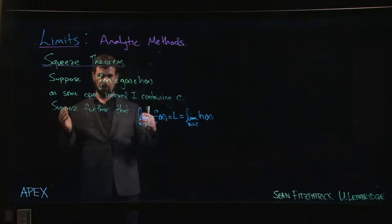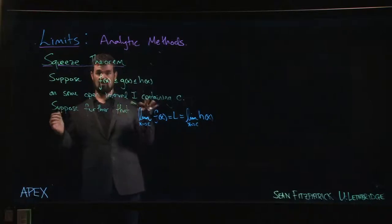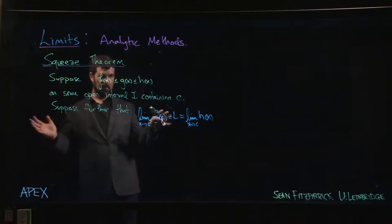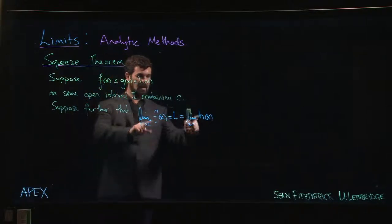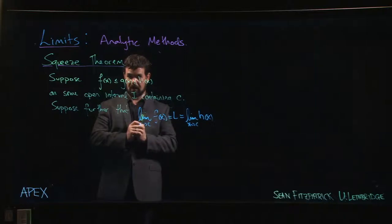You could go a little bit further and allow situations where things reverse themselves as long as it's always the case that g of x is in the middle between the other two. The other assumption we make is that these two functions on the outside have the same limit at this point c.